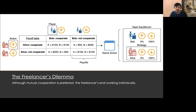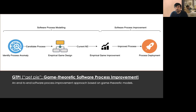Although the organization and the freelancers could be in a better position if they cooperate, the software process behind the contract forces them to abandon cooperation. We believe that many software processes suffer from a similar problem, converging towards unwanted behavior at equilibrium. To address this issue, in our paper we propose GetPi, a software process improvement approach based on game theoretic models.